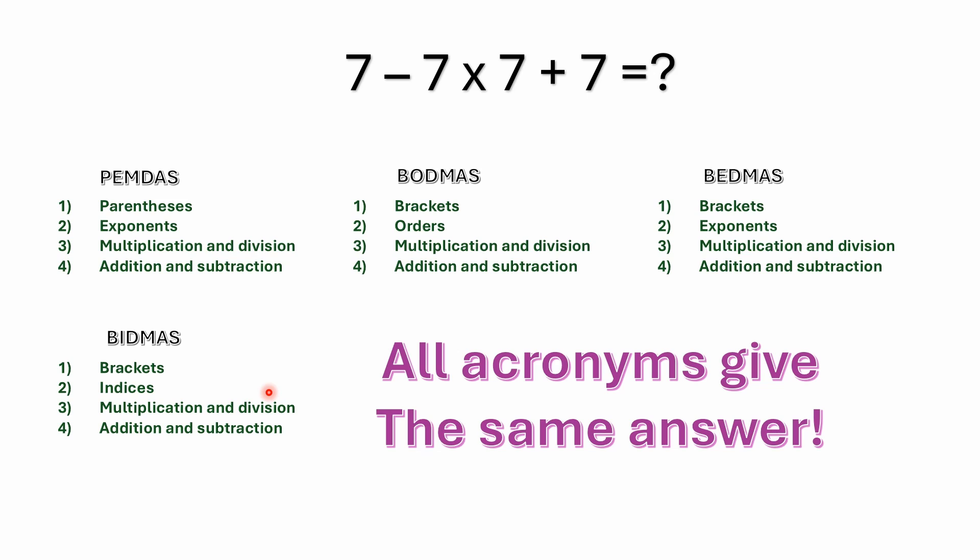Then of course, after that, you've got multiplication and division. A lot of people get confused here because they'll assume multiplication is first or division comes before multiplication, when in fact they have equal precedence. That's why the acronyms confuse people — they'll see the D before the M or the M before the D. It makes no difference because division is just multiplication by a reciprocal. In Kenya, they may have taught division before multiplication, but you will get the same answer either way.